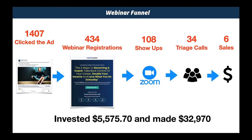Out of the show-ups, 34 people booked a triage call. My client gets on that call and then moves them to a second meeting where he sells the $5,000 program. Out of 34 meetings, six people were sold — and there are more sales coming. He runs a course every month. Six sales came out of this in a four-week period.